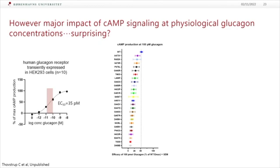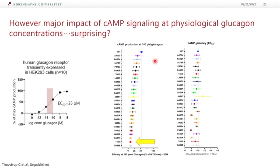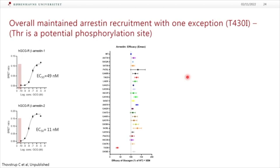One variant had a surprisingly higher affinity, sitting in the C-terminus with a potential phosphorylation site — it's a threonine. Looking at cyclic AMP, we saw a surprising impact on most C-terminal variants. Ordering them by their ability to activate the receptor up to 100 picomolar — which we defined as the highest physiological range — they are quite affected in cyclic AMP. It's not the potency or the binding transition into signaling that is wrong; it's more the overall maximum efficiency of signaling, because the potency is quite preserved.